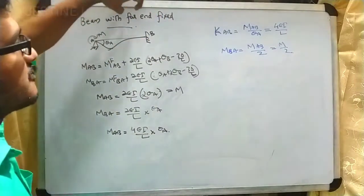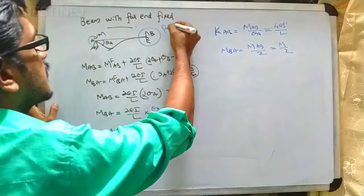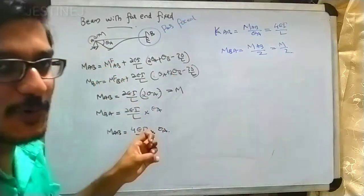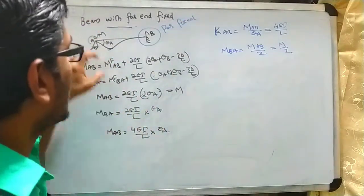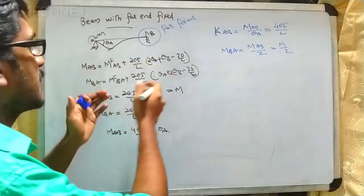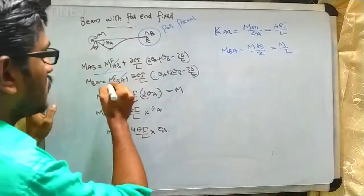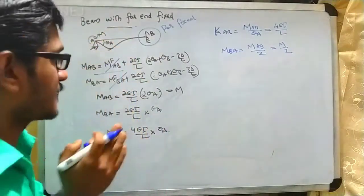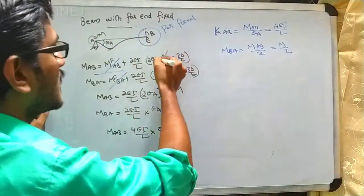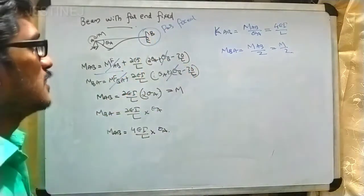Now moving to the second case: when one end is hinged and the far end is fixed. We again apply a moment of magnitude M at joint A and use the slope deflection equation. The fixed end moments are zero since no loads are active, and θ_b = 0 since the far joint is fixed.